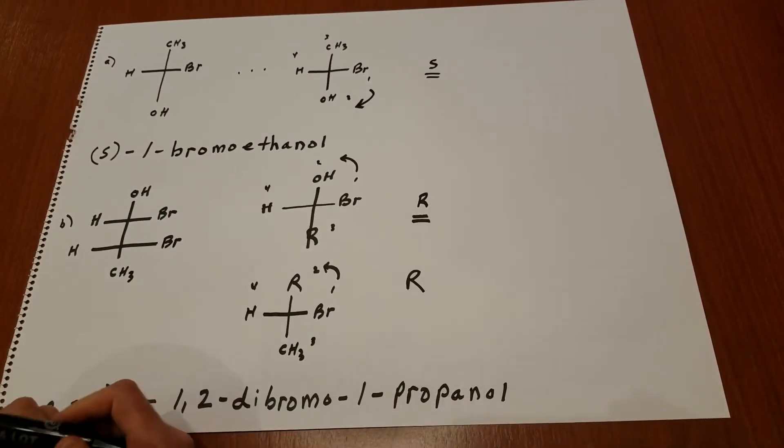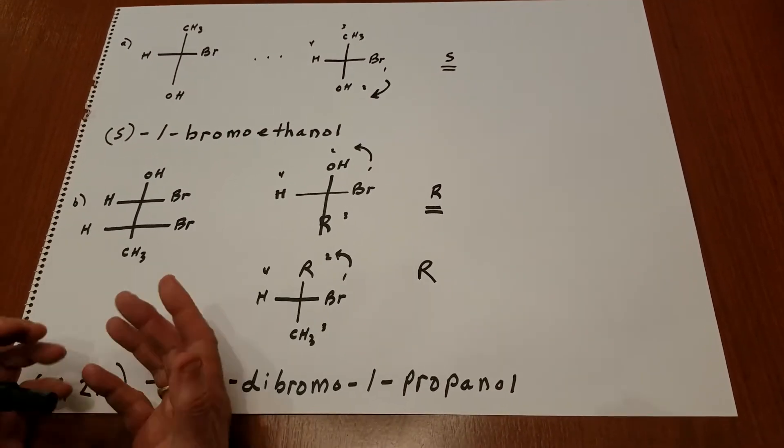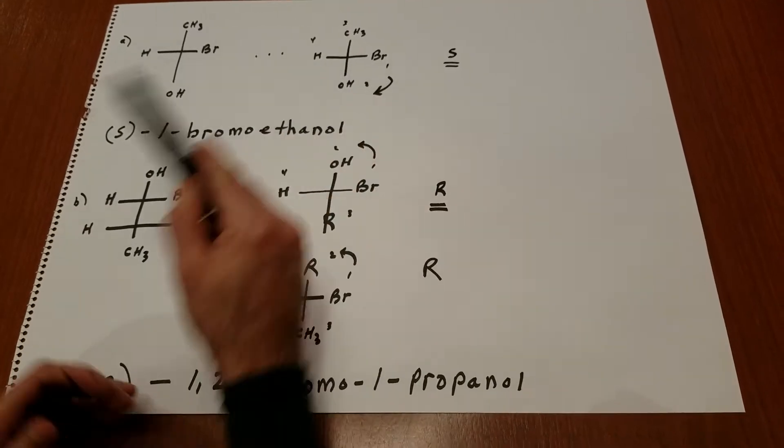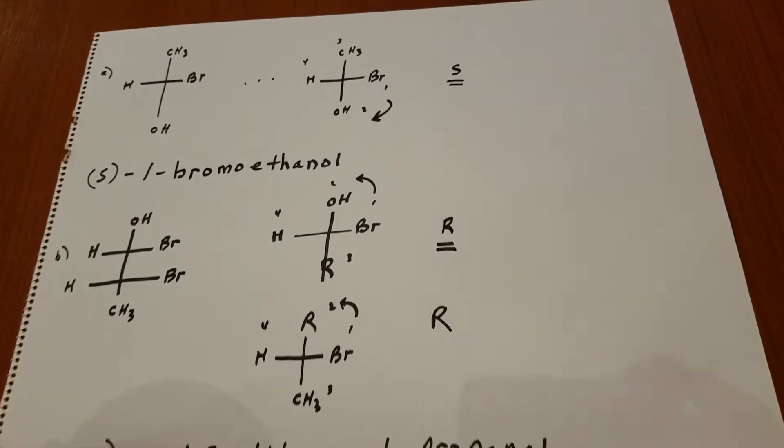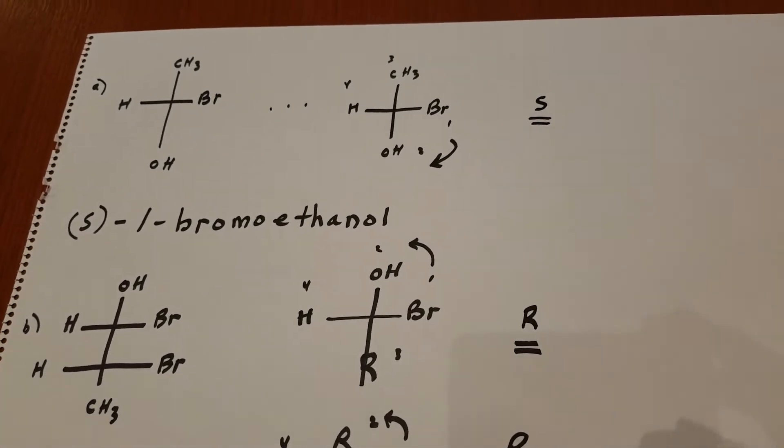Now, normally when you go clockwise from number one to two, it's an R. But if number four is along the horizontal, you're going to switch your thoughts. So instead of being an R, the configuration is an S.